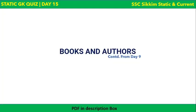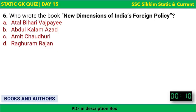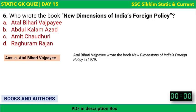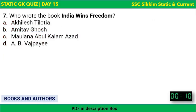Moving to books and authors, a continuation from day nine. Who wrote the book 'New Dimensions of India's Foreign Policy'? The options are Atal Bihari Vajpayee, Abdul Kalam Azad, Amit Chaudhari, or Raghuram Rajan. The correct answer is Atal Bihari Vajpayee, the former Prime Minister of India. He wrote this book, and it was published in 1979.